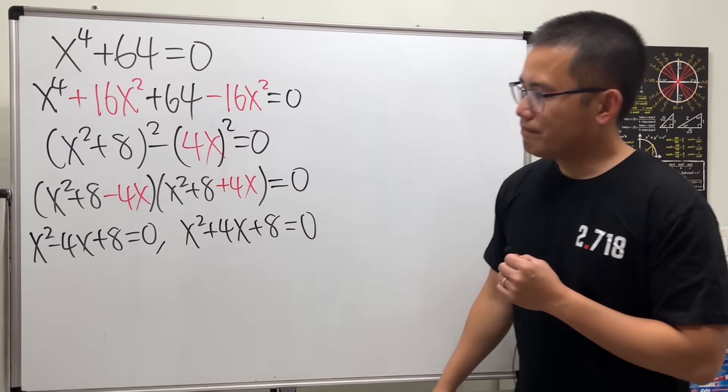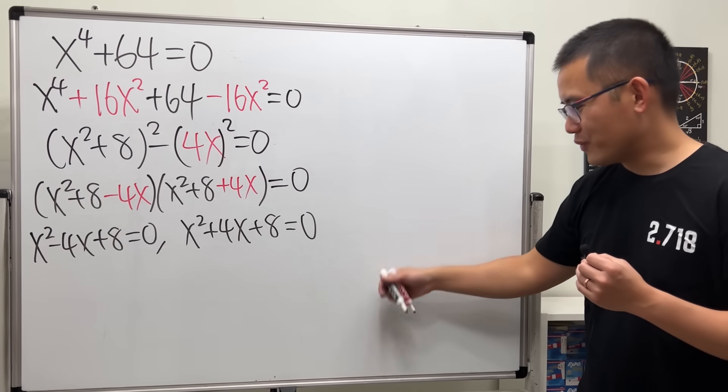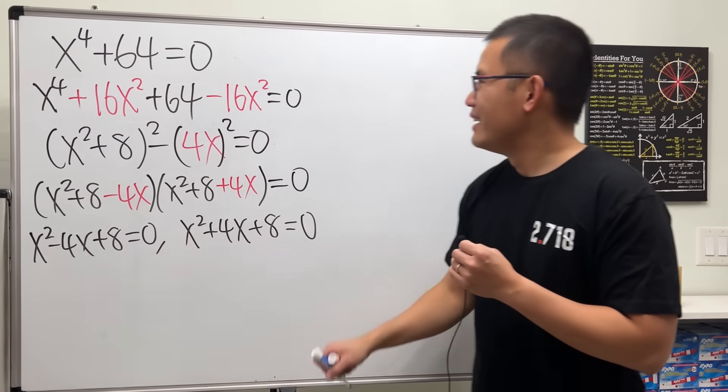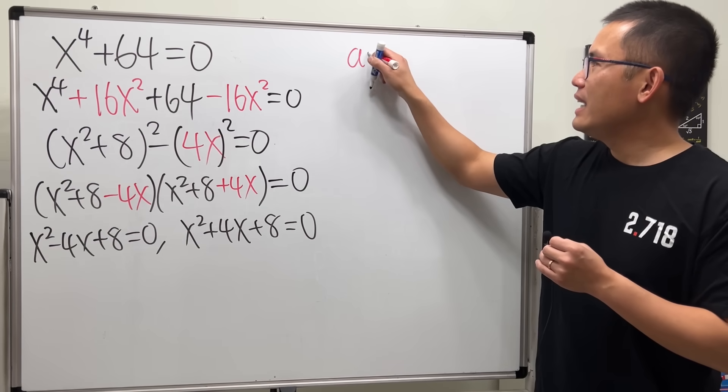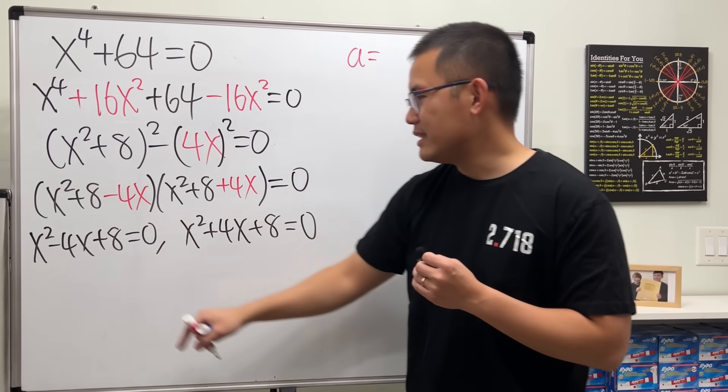For the first one, since we have negative, I would like to show you guys how to use the quadratic formula for it. So, I'm looking at a equals 1, b equals negative 4, and c is equal to 8.